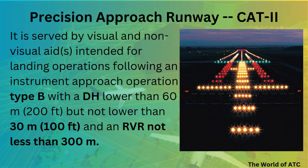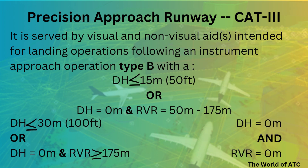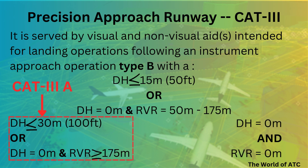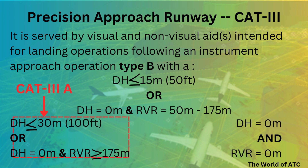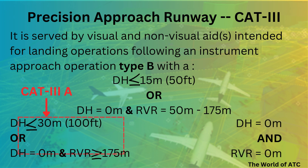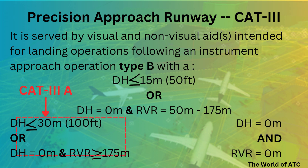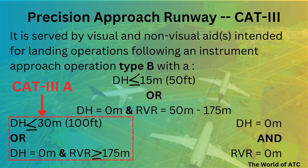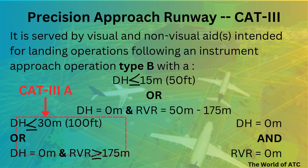Moving on towards precision approach runway CAT-3. There are three types: CAT-3 Alpha, Bravo, and Charlie. In CAT-3 Alpha the decision height would be equal to or less than 100 feet but not less than 50 feet. However, in some cases the decision height could be zero in CAT-3 Alpha if the RVR is at least 175 meters.